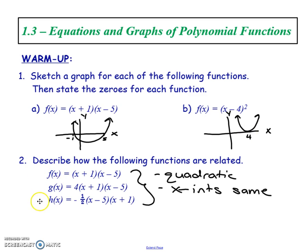This is called a family of functions because they all have the same x-intercepts — three at positive 5 and three at negative 1. They're all quadratic because in factored form they only have two factors, which means degree 2. They are different though in terms of their leading coefficients.